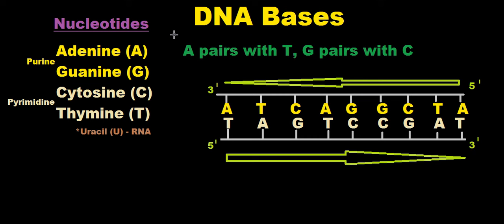DNA is a nucleic acid. This nucleic acid is made up of nucleotides. The nucleotides are adenine, guanine, cytosine, and thymine: A, G, C, and T.